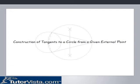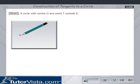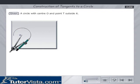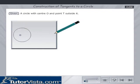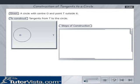Construction of tangents to a circle from a given external point. Given a circle with center O and point T outside it, to construct tangents from T to the circle, the steps of construction are as follows.